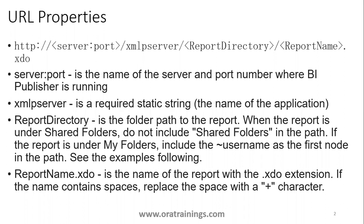When you have a BIP report, the URL has an appropriate set of contents. The first part is the server and port — for example, http://server:port — which contains information about your server and the port number on which your BIP server is running, whether on-premise or cloud-based. 'xmlp' is a required static string because it is the runtime engine responsible for executing BIP reports.